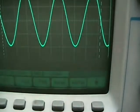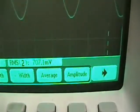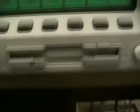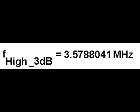Okay, we have located the upper 3dB frequency: 700 millivolts, 0.707 volts roughly, and the frequency 3.5787804 megahertz.